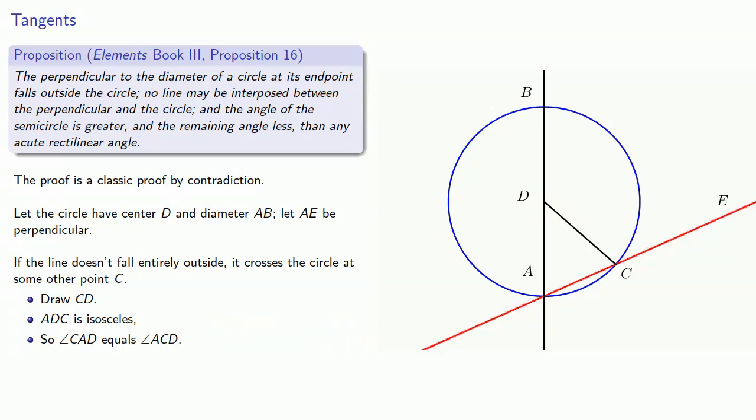But remember, angle CAD is a right angle. But this produces a triangle with two right angles, which is impossible. Which means our assumption must be false.